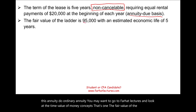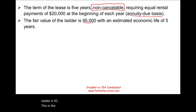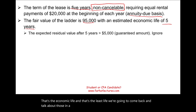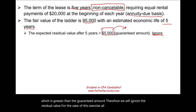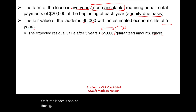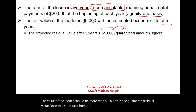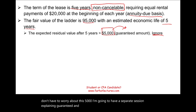The fair value of the ladder is ninety-five thousand dollars, and the economic life of the asset is five years — the same as the lease term. The expected residual value is greater than five thousand, which is greater than the guaranteed amount. Therefore we will ignore the residual value for this exercise. Once the ladder is back to Boeing its value should be more than the five-thousand guaranteed residual value, so from Delta's perspective as lessee we don't need to worry about that five thousand. A separate session will explain guaranteed and unguaranteed residual value in more detail.